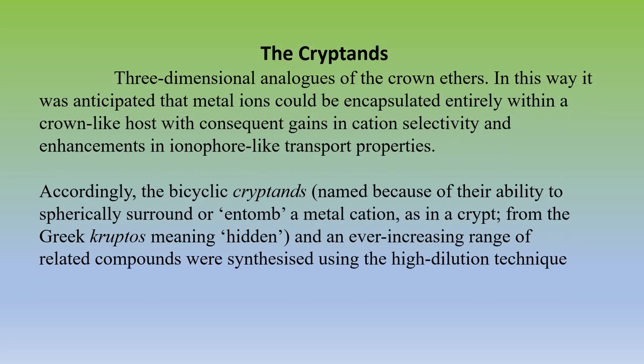What are cryptands? A cryptand is a three-dimensional analog of crown ether. Crown ether is a monocyclic structure, whereas cryptand is a bicyclic — macro bicyclic — structure. Like crown ethers, cryptands also have affinity for the selective binding of cations, and they can act as ionophores with transport properties similar to those existing in podands.